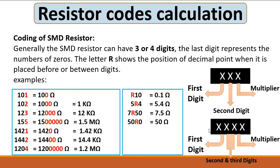For a four-digit SMD resistor, the fourth digit is the multiplier — the same working principle as the three-digit resistor. For example, '1421' means 1420 ohms (one zero). '1204' means four zeros, which equals 1.2 mega-ohms.